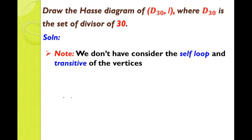What is meant by self-loop? That is nothing but reflexive relations. What is a reflexive relation? (X, X) belongs to relation R. What is a transitive relation? If (X, Y) belongs to R and (Y, Z) belongs to R, then (X, Z) belongs to R. So in the Hasse diagram, we do not consider the self-loop and the transitive edges.